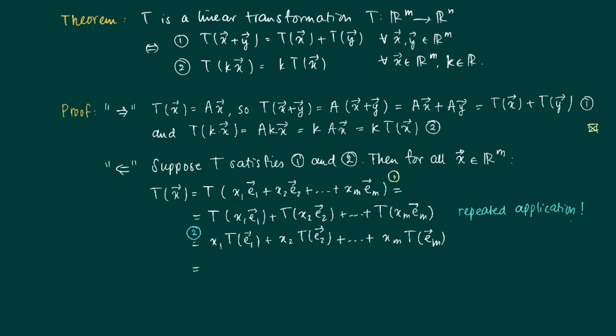And now recognize that actually this is a matrix-vector product. Well, if we build up the matrix from the images of the standard unit vectors T(e1), T(e2), T(em), then what it says here is a linear combination of the columns of this matrix, so this is a matrix-vector product.